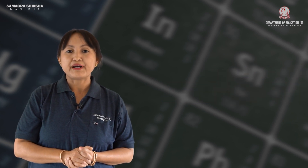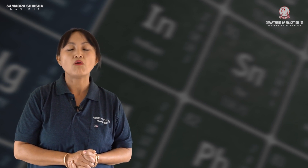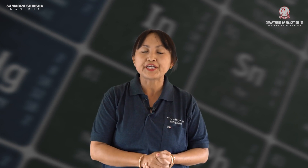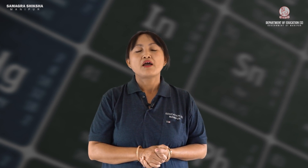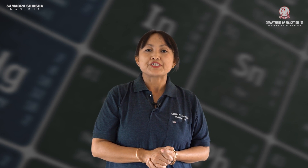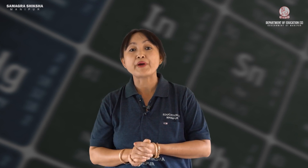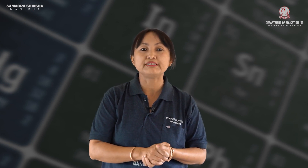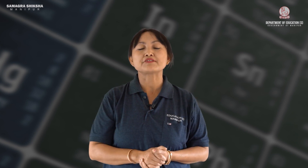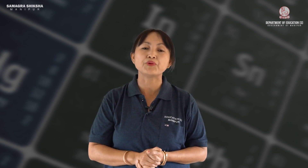Group 18 elements are the zero group elements, known as noble or inert gases. Their combining capacity is zero — they rarely react and are essentially unreactive elements at ordinary room temperature. These gases exist at room temperature and form the noble or inert gas element group.